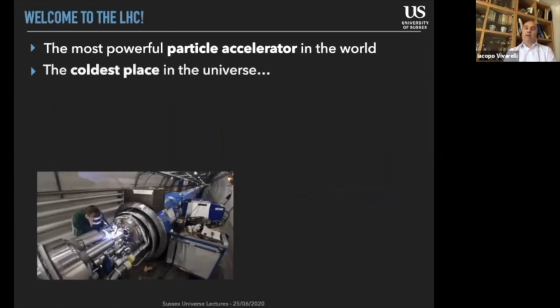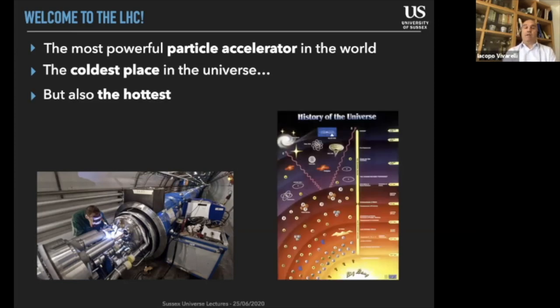It is an exciting place. We say it's the coldest place in the universe, and what we mean by that is that the temperature at which we keep the magnets that are used to keep the particles spinning around the accelerator is 1.9 Kelvin, which is 0.4 Kelvin below the temperature of the cosmic microwave background. That is the temperature of empty space. But at the same time, we also say it's the hottest place in the universe, and by that we mean that the energies that we achieve in the particle collisions are energies that were available naturally in the universe only a few moments after the Big Bang.